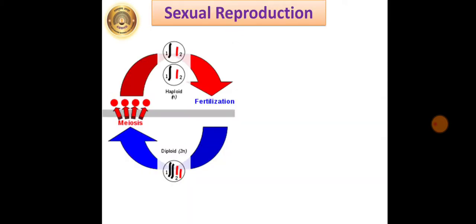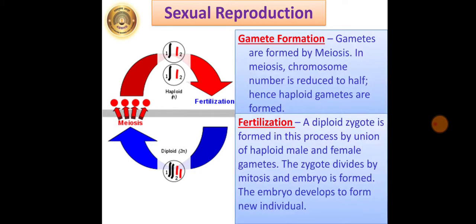Sexual reproduction always occurs with the help of two germ cells. Female gamete and male gamete are those two germ cells. Two main processes occur in sexual reproduction: gamete formation and fertilization. Gametes are formed by meiosis. In meiosis, chromosome number is reduced to half, and hence, haploid gametes are formed. A diploid zygote is formed in fertilization by union of haploid male and female gametes. The zygote divides by mitosis and embryo is formed. The embryo develops to form new individual.